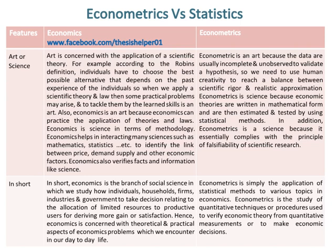In short, economics is the branch of social science in which we study how individuals, households, firms, industries and governments make decisions relating to the allocation of limited resources to productive uses for deriving more gain or satisfaction. Hence, economics is concerned with theoretical and practical aspects of economic problems encountered in day-to-day life, while econometrics is simply the application of statistical methods to various topics in economics. Econometrics is the study of quantitative techniques or procedures used to verify economic theory from quantitative measurements or to make economic decisions.